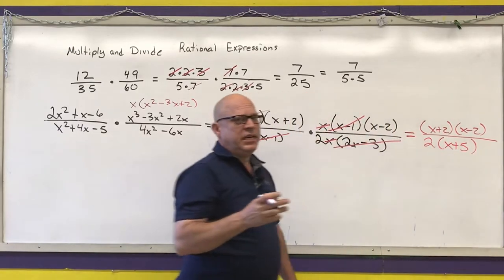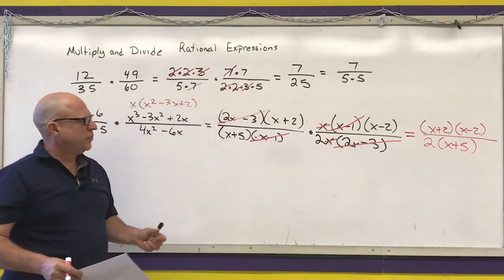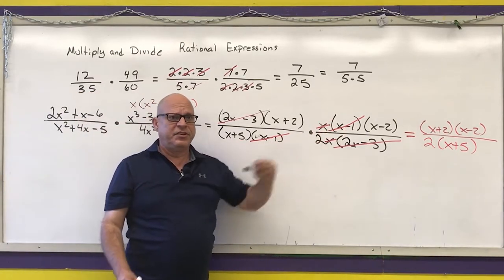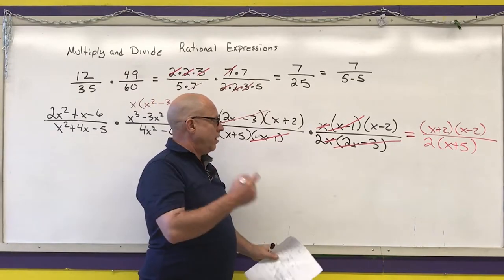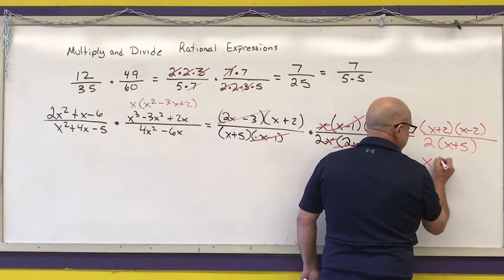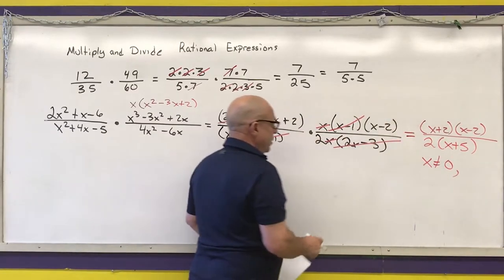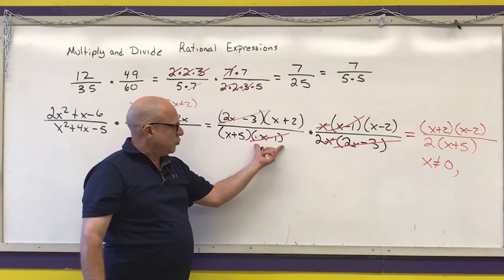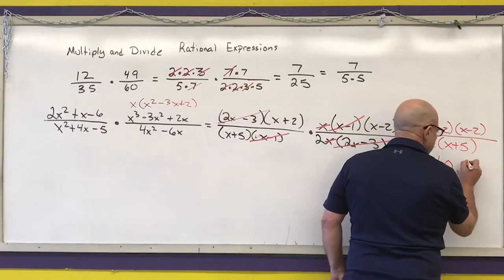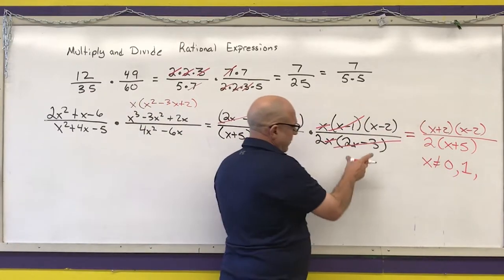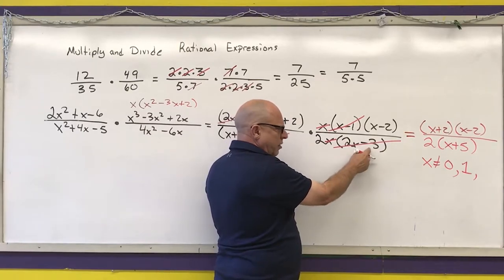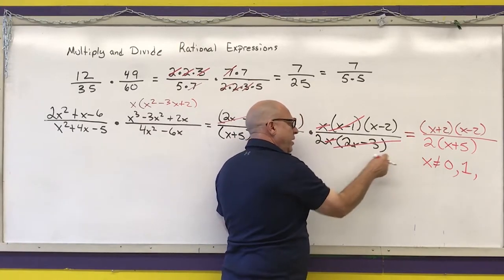From the video on simplifying rational expressions, you need to take into account anything crossed off in the denominator. I crossed off an x, so x cannot equal zero. I crossed off an (x - 1), so x cannot equal one. I crossed off a (2x - 3), so x cannot equal three-halves.